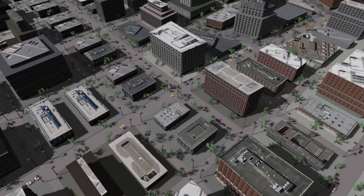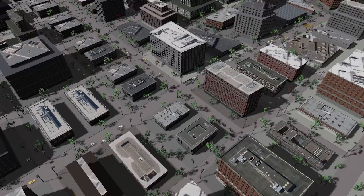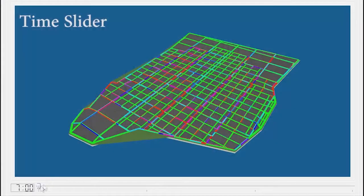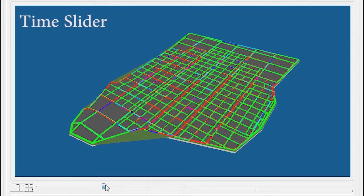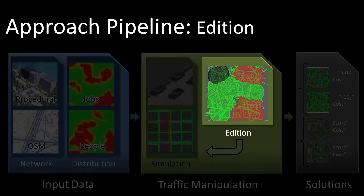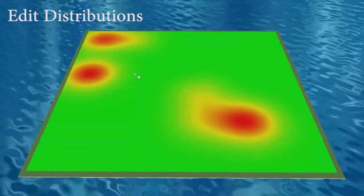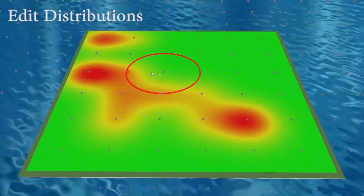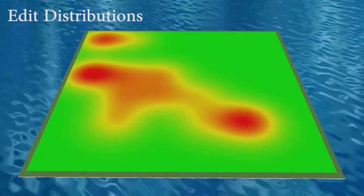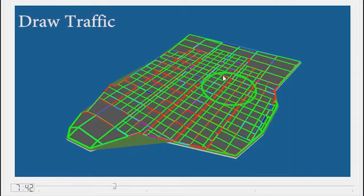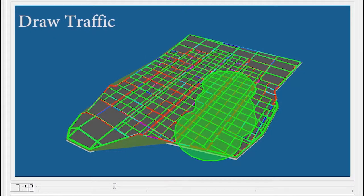Our traffic micro-simulation engine yields detailed per-vehicle data for animation and produces the fast performance needed for our design strategy. Our method provides an interactive virtual paintbrush tool whereby the user can specify new people or jobs distributions or desired changes in traffic behavior.